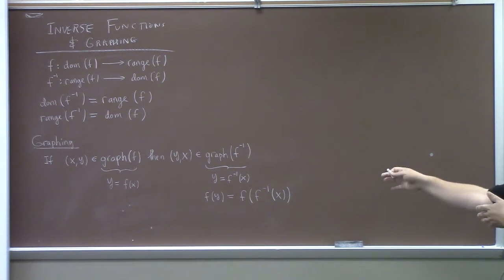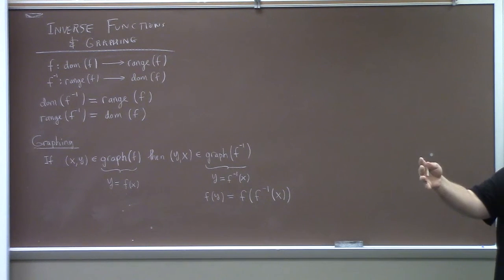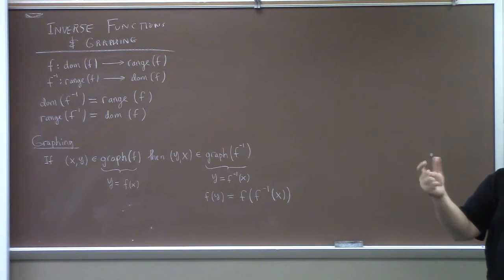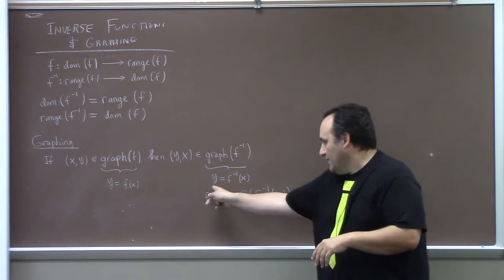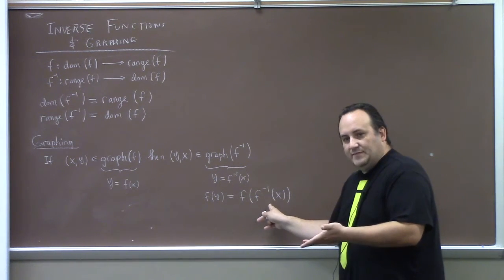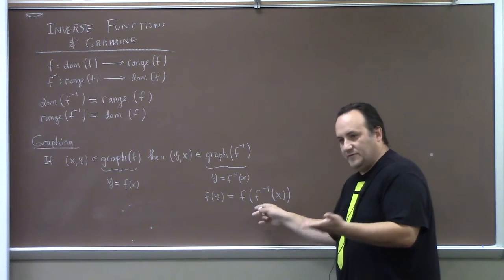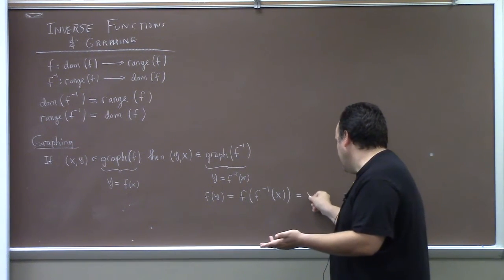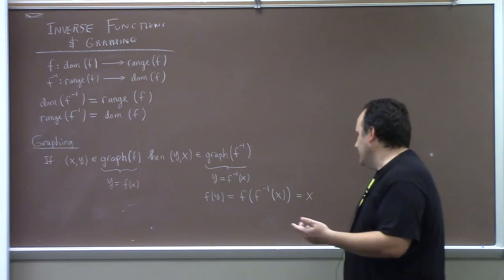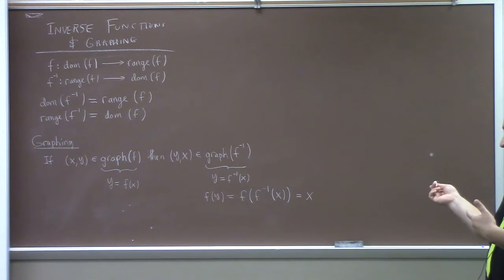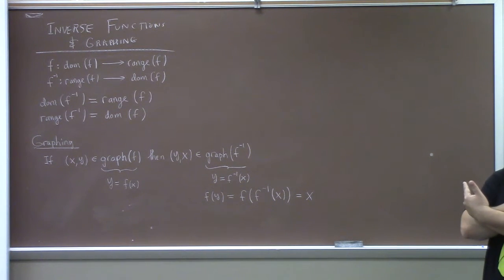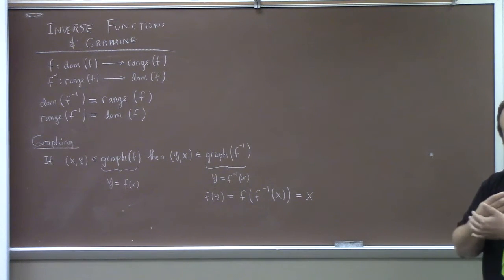My point is, if y equals f inverse of x, then the key property is that if you compose an equation written in terms of the function with the inverse function, they cancel out. So if I take f of y, it equals f of f inverse of x, but those cancel and you're just left with x again. So x equals f of y, which means the roles of x and y are flipped for the inverse function. That's how we create the graph of the inverse function from the given graph.